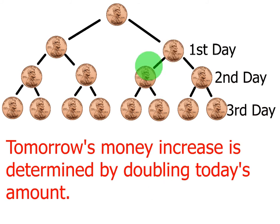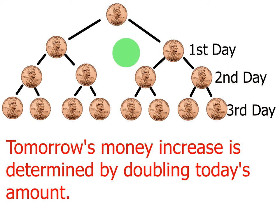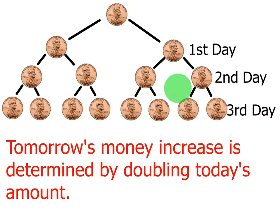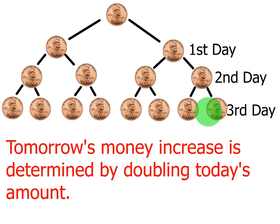For this particular illustration, we're going to use pennies to explain exponential growth. Let's say you start out with a penny and someone says they're going to double that amount. On the first day, they pay you two pennies — twice the amount you started with. On the second day, they pay you twice the first day's amount: four pennies. On the third day, they double again and pay you eight pennies.